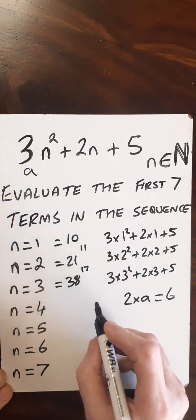Now what I'm interested in is the difference between these numbers. 10 to 21 is 11. 21 to 38 is 17. What I can see is that the difference of the differences is 2 times a, which is 6. Here this is the a coefficient. So my differences should now go up in sequences of 6.